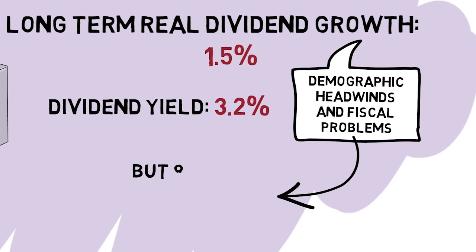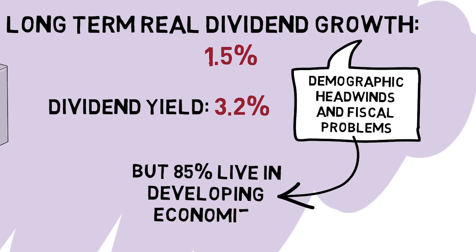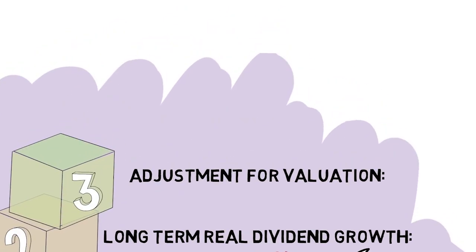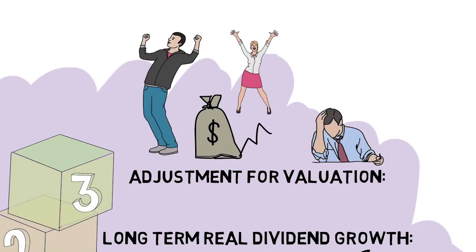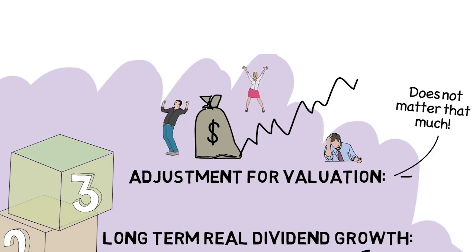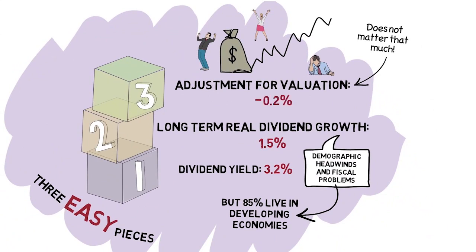On the other hand, let's not forget that about 85% of us still live in developing economies, which should provide lots of growth potential. Finally, although it's not such a big factor given our long-term horizon, we do need to make an adjustment for the expected future valuation of the stock market. While sentiment and animal spirits are the main drivers of the ups and downs of the stock market in the short run, at a very long horizon, stock market valuation just doesn't matter that much. Let's assume the market today is about 10% more highly valued than it will be in the future, which shaves just 0.2% per year off our long-term return estimate.